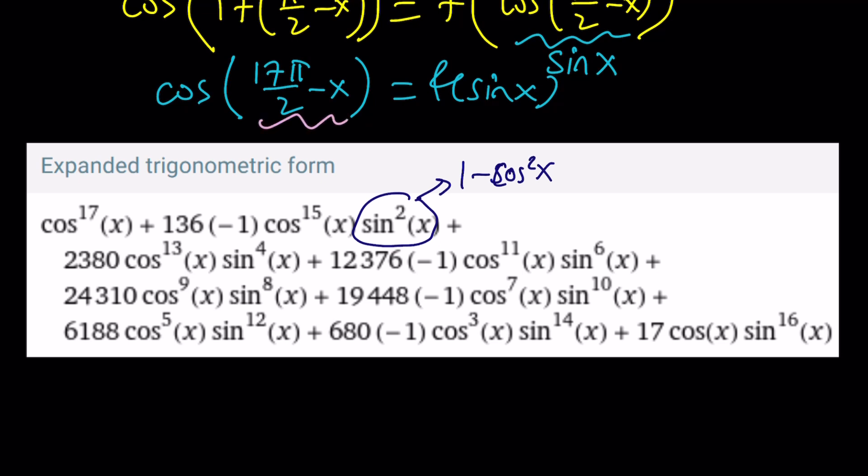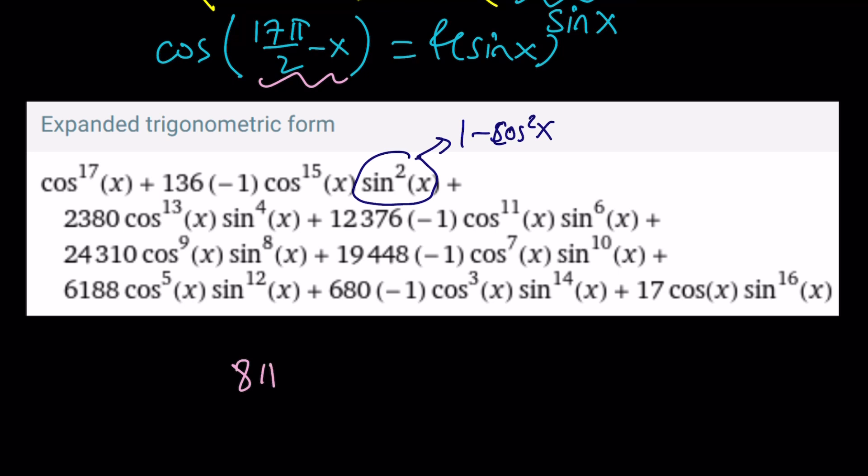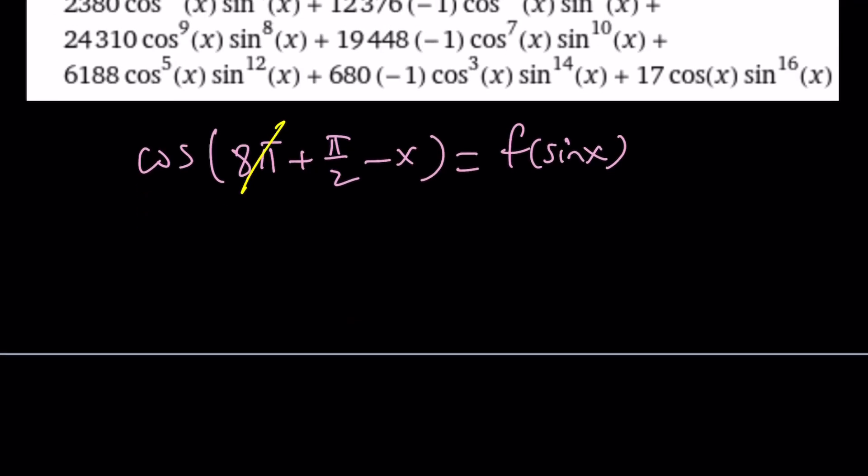And that's actually 8π + π/2 - x. And then we have to cosine it. And that's going to be f(sin x). Now notice that 8π is not important. We can get rid of it and write this as cos(π/2 - x) = f(sin x).